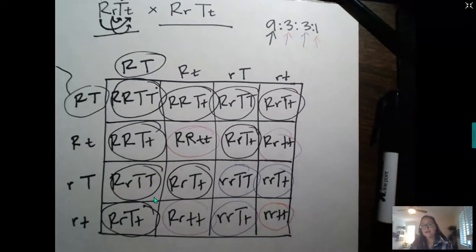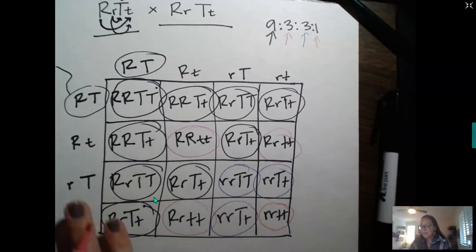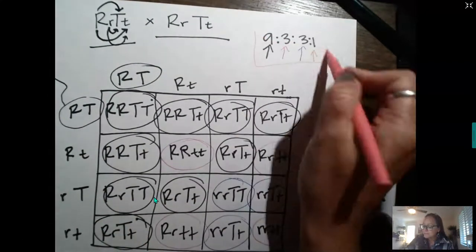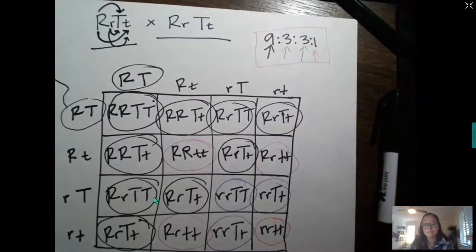So if you were to ask, what is the probability of an offspring having the dominant trait for R but the recessive trait for T, you would get 3 out of 16. Or being homozygous recessive for both would be 1 out of 16. And so that is how you set up a dihybrid cross and where that 9 to 3 to 3 to 1 phenotypic ratio comes from.